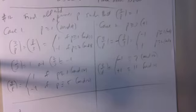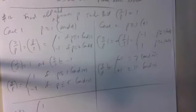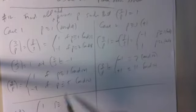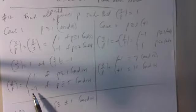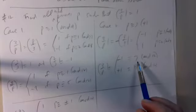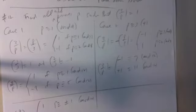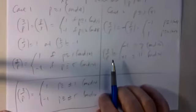Putting these cases together: (3/p) = 1 if p ≡ 1 or 11 mod 12, and (3/p) = −1 if p ≡ 5 or 7 mod 12, which is the same as ±5 mod 12. So this is the final answer.